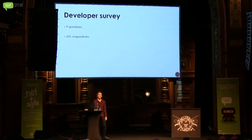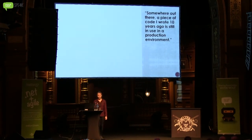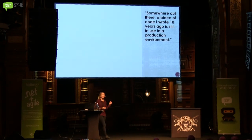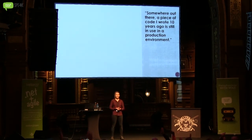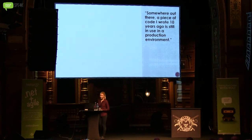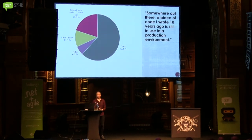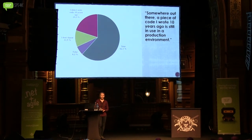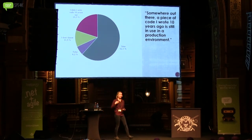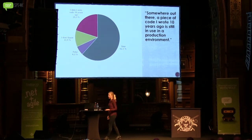One of the first things I asked in this survey was: 'Somewhere out there, a piece of code I wrote 10 years ago is still in use in the production environment.' Put your hand up if this goes for you. That's quite a lot. Here are the results: 62.1% of respondents have 10-year-old production code; 6.2% do not; 11.4% don't know — because if you're no longer working with that code or part of that project team, how are you supposed to know? And 20% didn't write code 10 years ago.